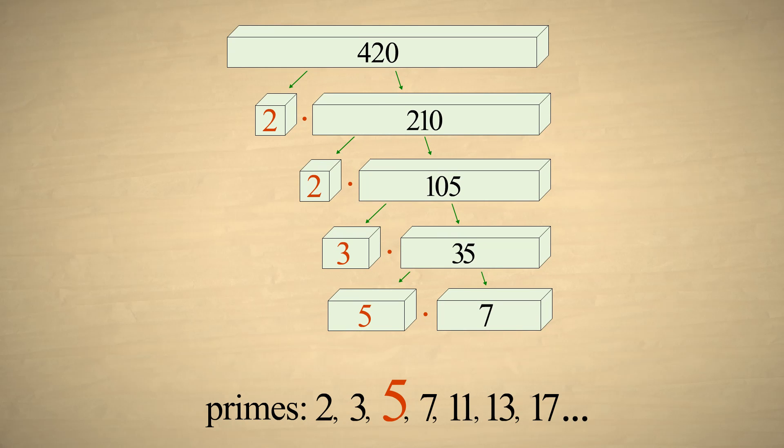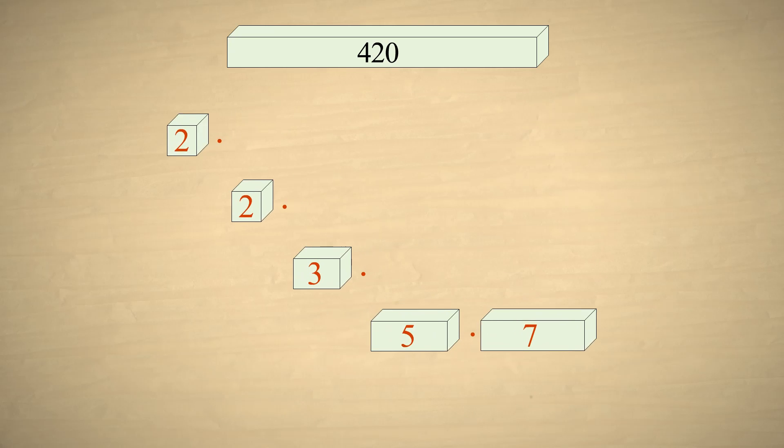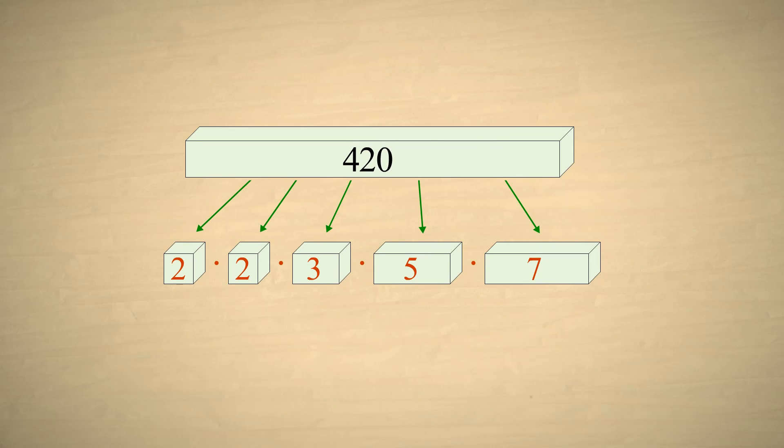Now we have the factors 2 times 2 times 3 times 5 times 7. Since 7 is a prime number, we are finished factoring. We have decomposed the composite number 420 into its prime factors.